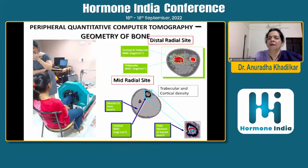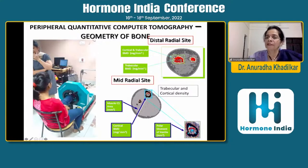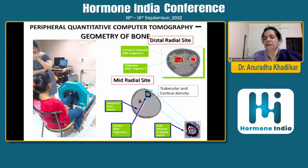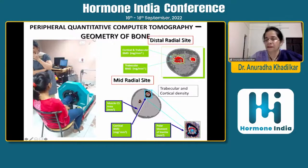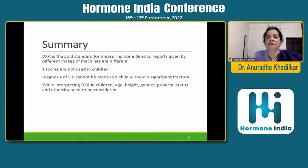We have started using a machine called pQCT — peripheral quantitative computed tomography — which differentiates between cortical and trabecular bone and has been giving us very interesting results in chronic disease states. It also provides information about muscle density, quality of the muscle, and fat infiltration of the muscle. We are really enjoying working with the pQCT.